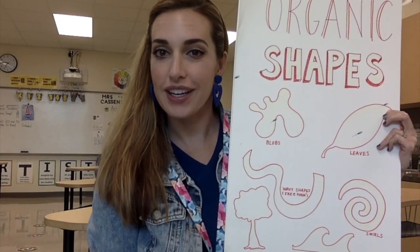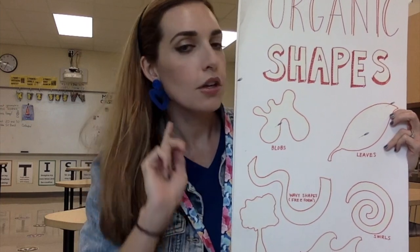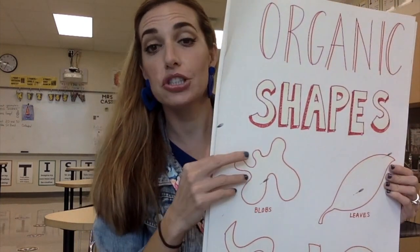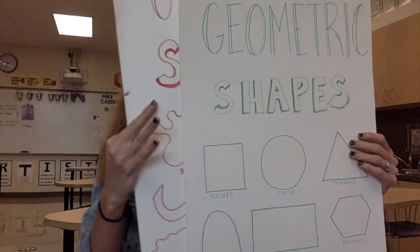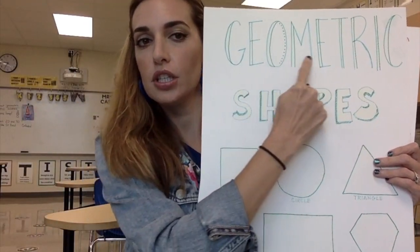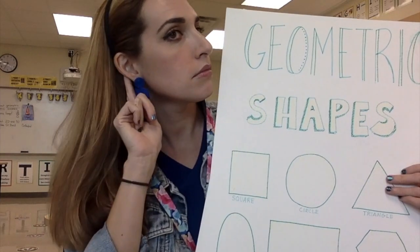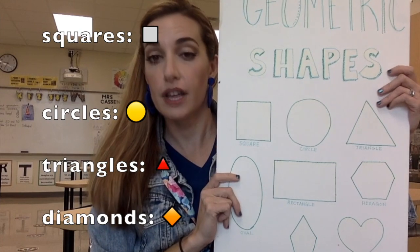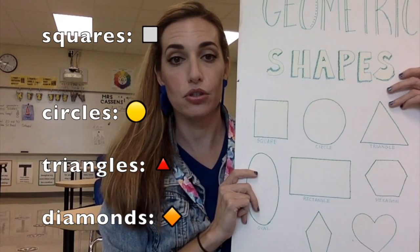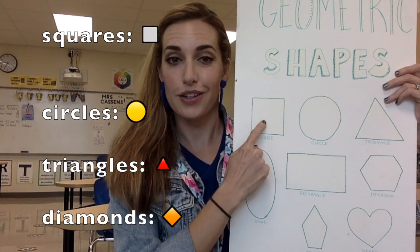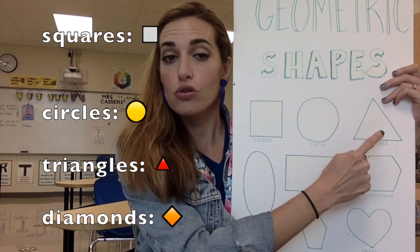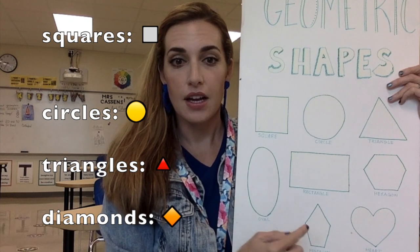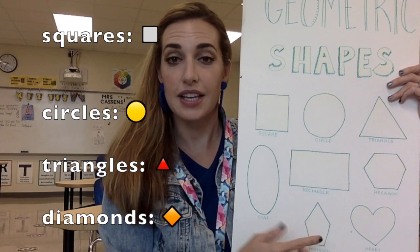Can you say organic? Great job. The second type of shape we're gonna look at today is called geometric. Can you say geometric? Nice job. Geometric shapes sometimes have hard edges, and examples include squares, circles, triangles, rectangles, any kind of rhombus, even pentagons and stars.